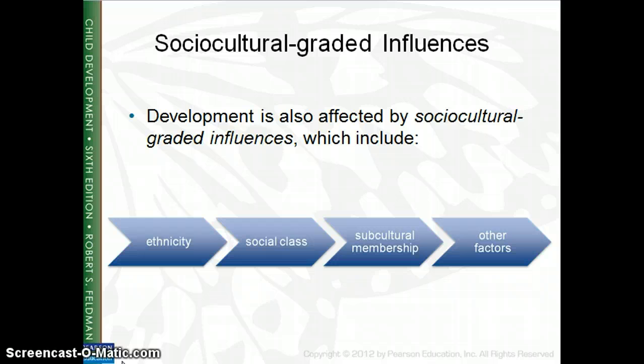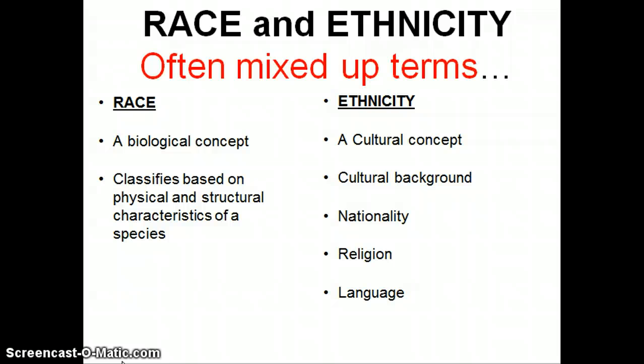In the book on pages eight and nine, they talk about different types of cohorts: age-graded, non-normative, and history-graded, so please take the time to read those. Race and ethnicity are two terms people often confuse and use interchangeably, but they're really not interchangeable. Race is a biological concept — we think about skin color or physical characteristics of individuals. Ethnicity, on the other hand, looks at your cultural background: your nationality, your religion, or the language you speak.